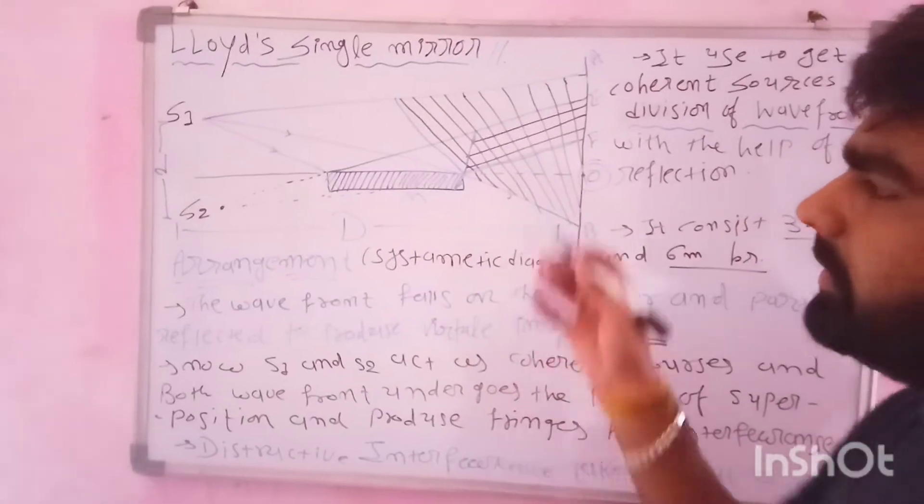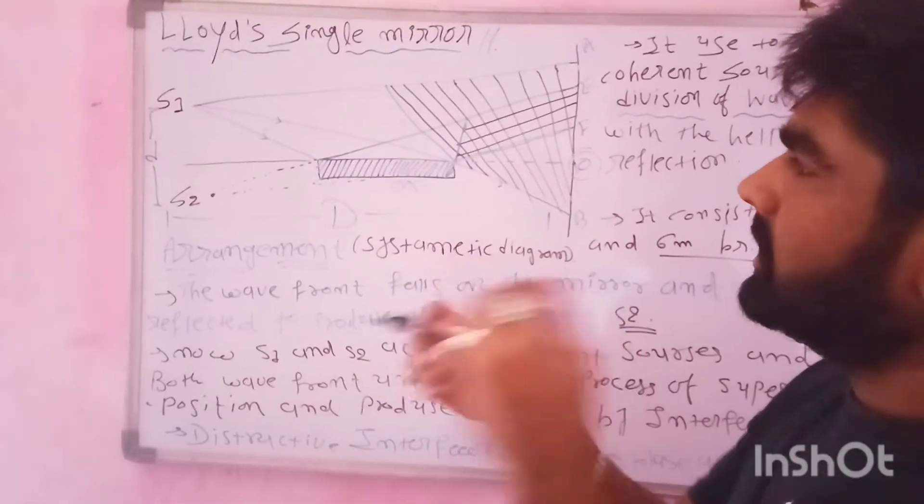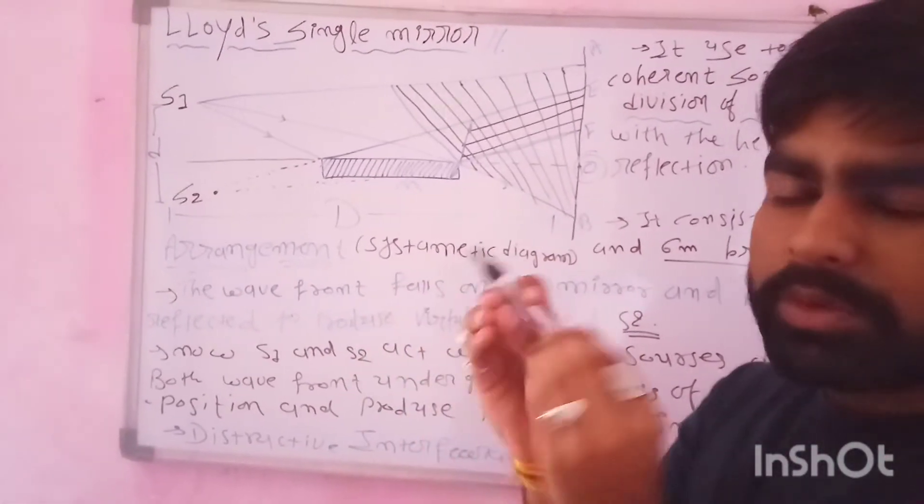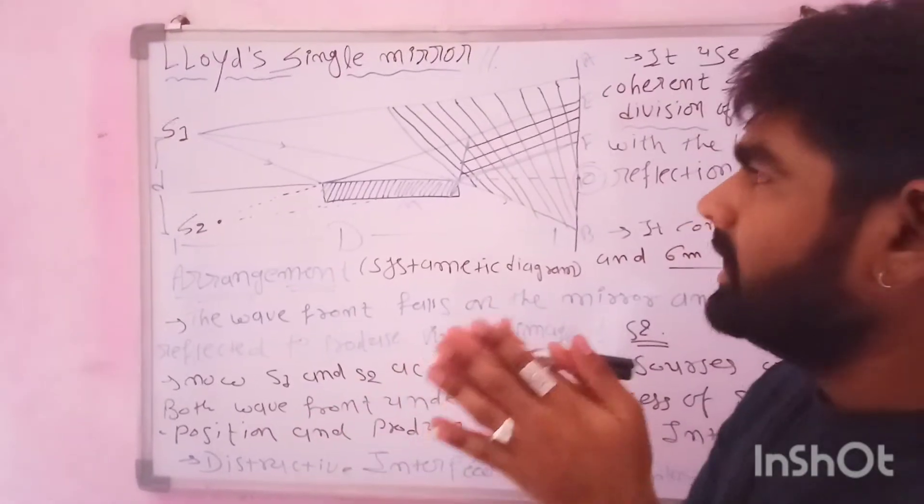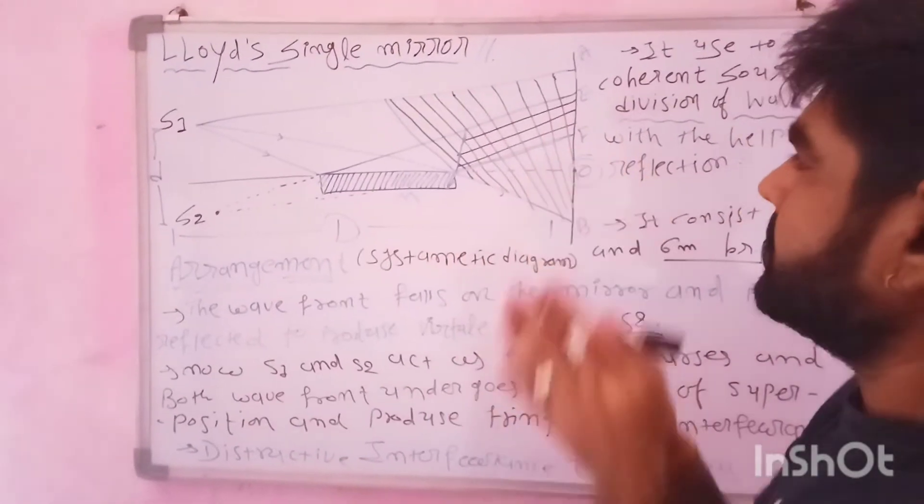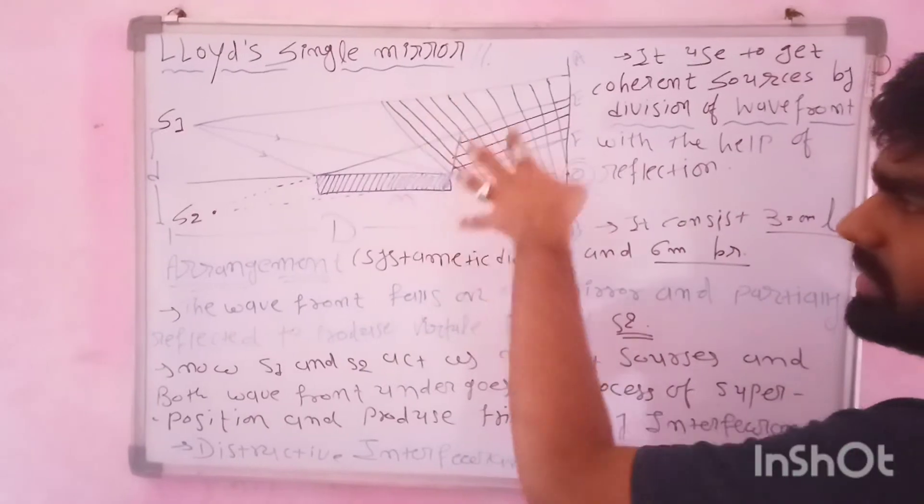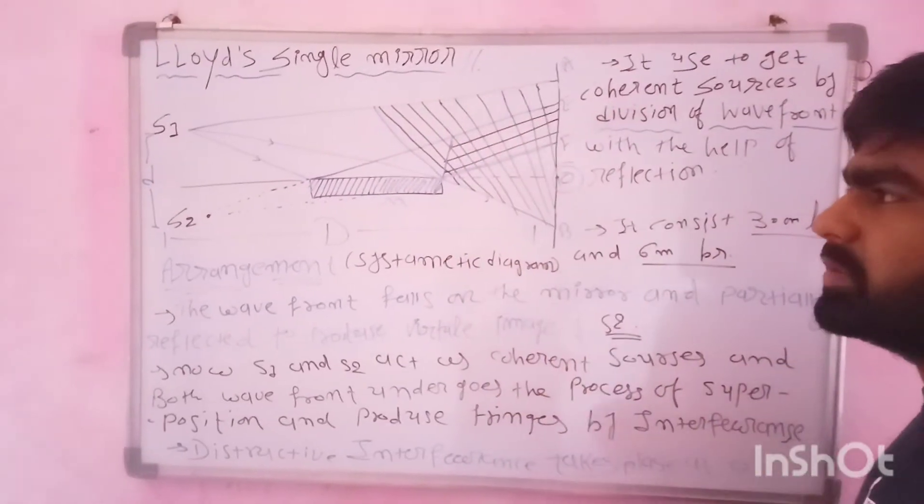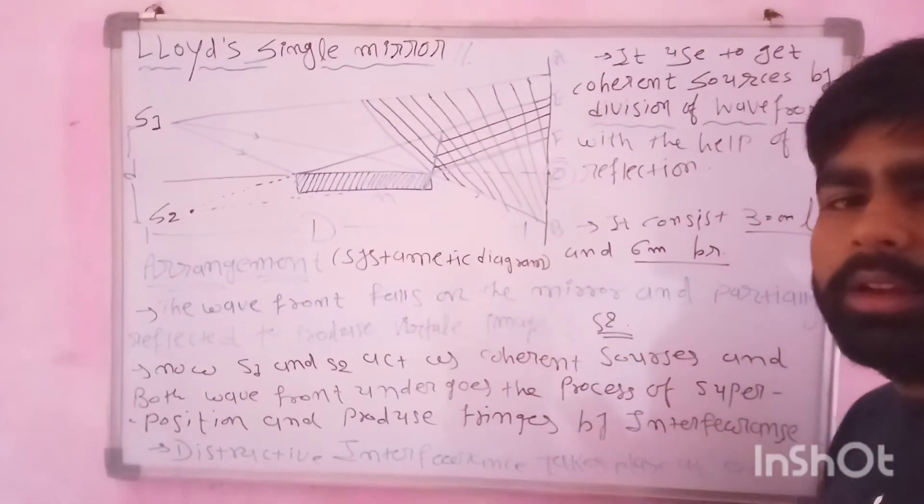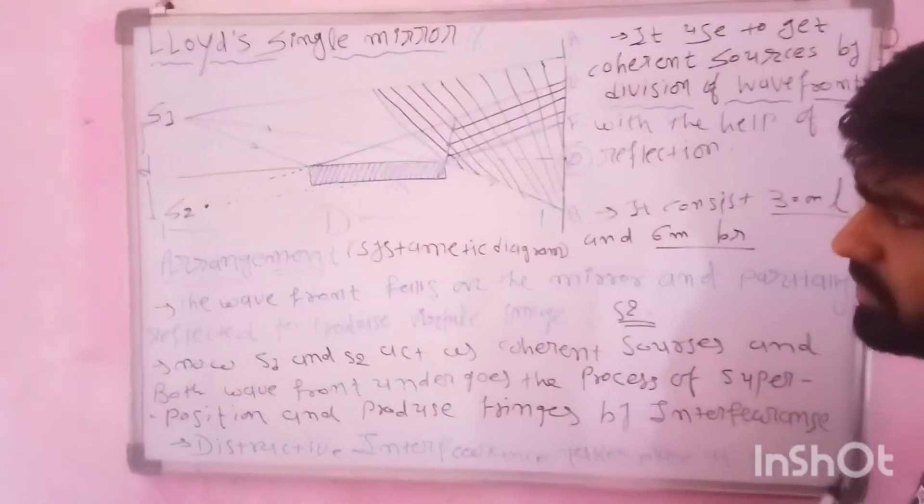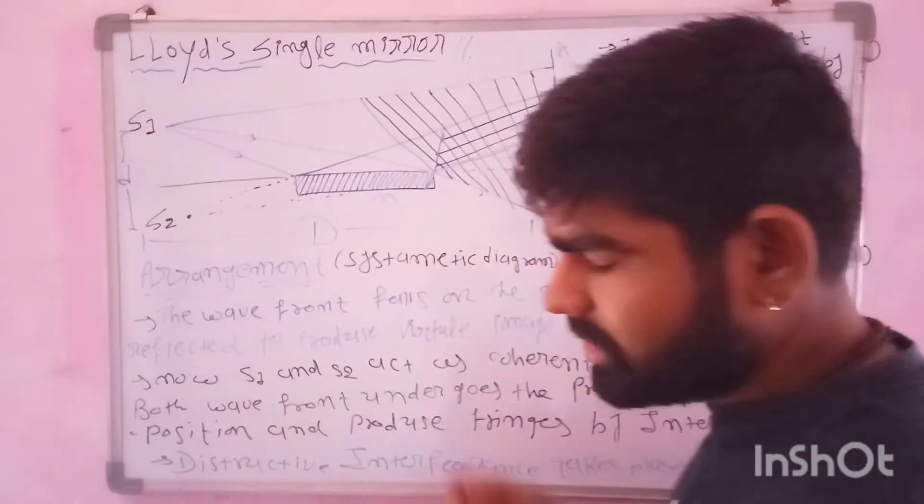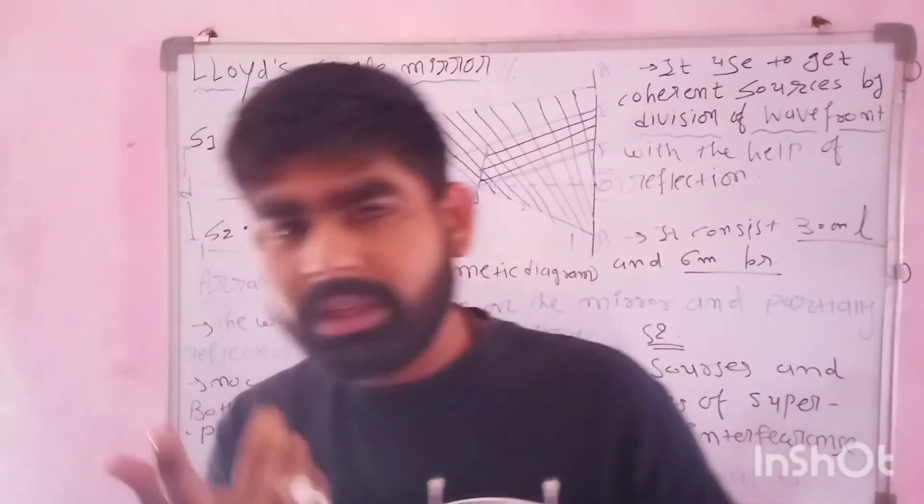And then reflection is processed to undergo the superposition. And after the superposition, interference occurs. And at last we get the fringes, destructive fringes.